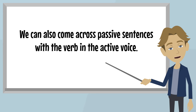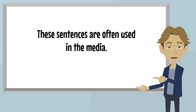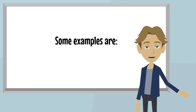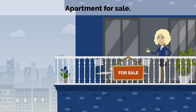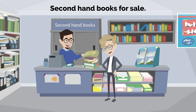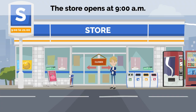We can also come across passive sentences with the verb in the active voice. These sentences are often used in the media. Some examples are: For rent. Apartment for sale. Garage for sale. Garage for rent. Secondhand books for sale. The store opens at 9 a.m.